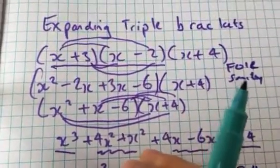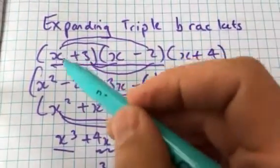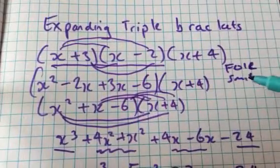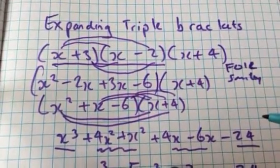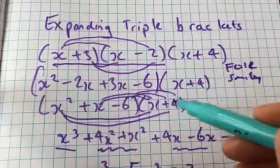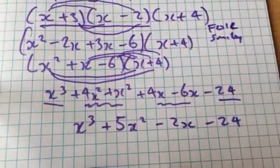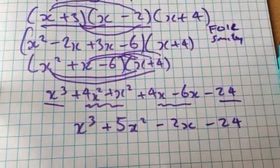So thanks for watching. That's expanding triple brackets. Treating a pair of brackets first using whatever method you use for the smiley method, and then expanding that third bracket there. Thanks for watching. Don't forget to like, subscribe, and share. And good luck for your GCSE exams.